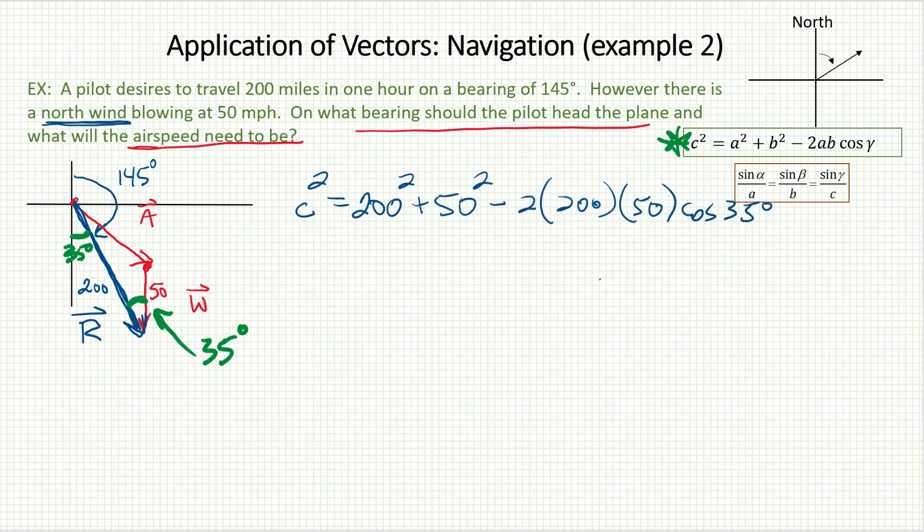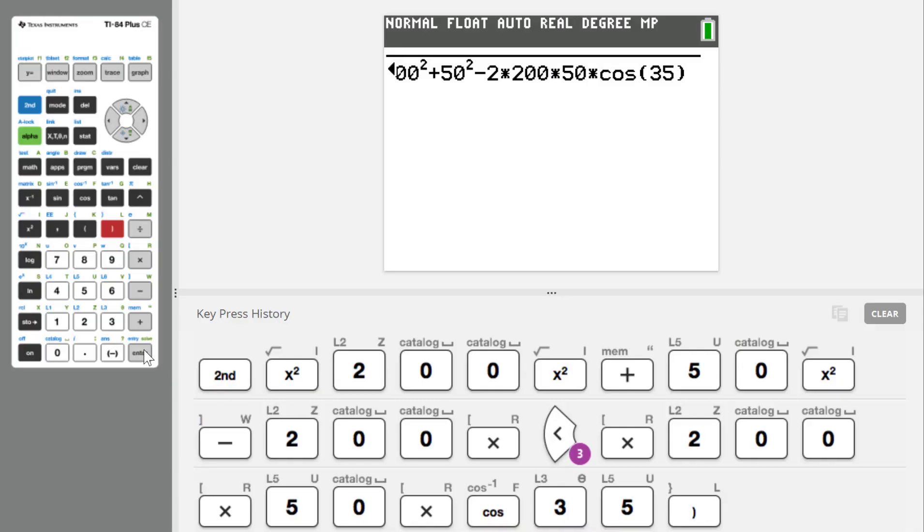So I've set up my law of cosines using 250 and the angle in between them 35 degrees. To get C, all I would have to do is square root, go to the calculator, and I've got it. I think I've got it typed in there, and so that comes out to be about 161.6.